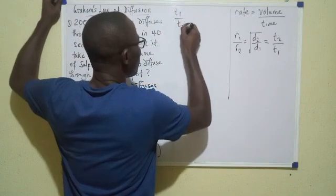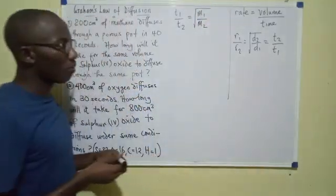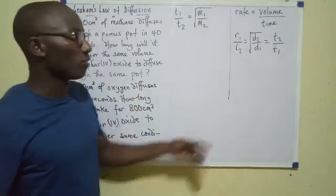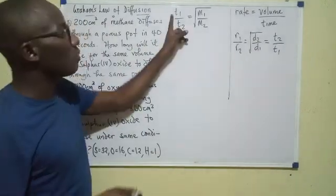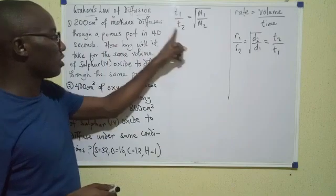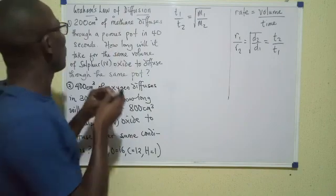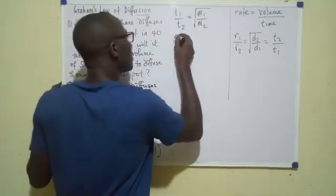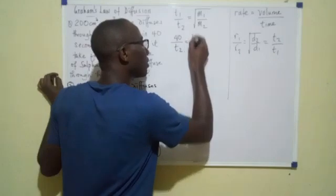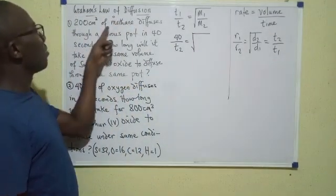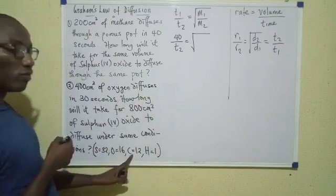t1 over t2 equals root m1 over m2. Remember we said d can be replaced with m. So t1 will be the time taken for methane to diffuse, t2 the time taken for the other gas, m1 the mass of methane, and m2 the mass of the other gas. t1, how long did methane take? It took 40 seconds. We are looking for t2, equals the square root of methane...